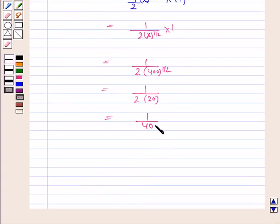So delta y is 1 by 40. Now 401 to the power 1 by 2 is equal to delta y that is 1 by 40 plus 20.